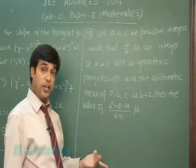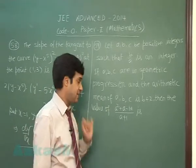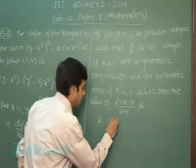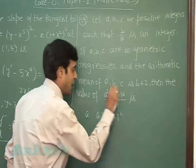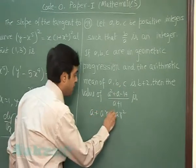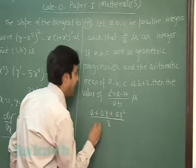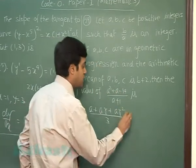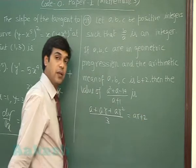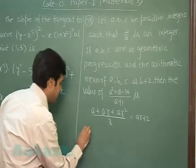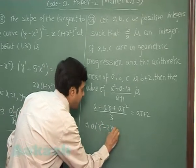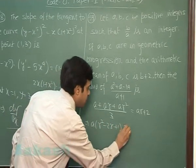Since a, b, c are in GP and the common ratio b/a is also an integer, let the numbers be a, ar, ar². The arithmetic mean of these numbers equals b + 2, that is ar + 2. Cross-multiplying and simplifying gives a(r² - 2r + 1) = 6.